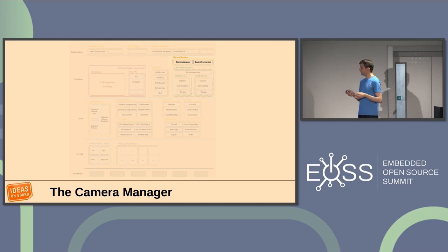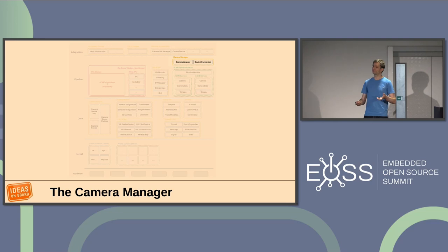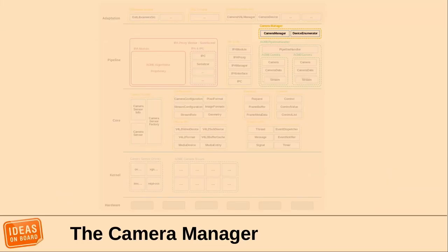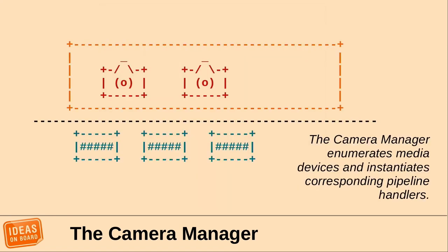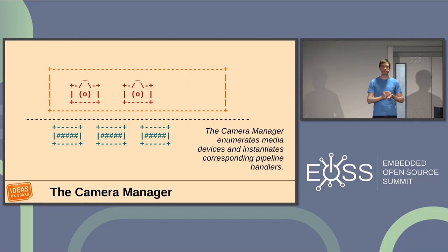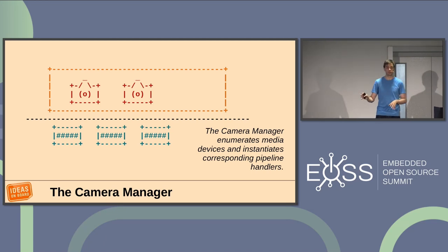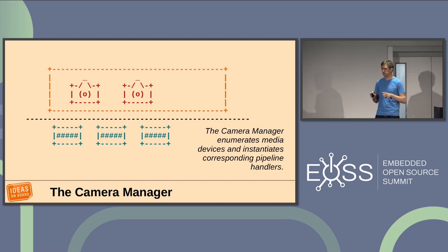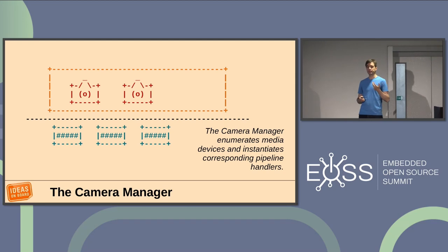The camera manager is what your applications go to: to enumerate cameras, see what's in the system, and get hold of cameras to use them. It also handles the creation of what we call pipeline handlers. The pipeline handler in libcamera is the platform-specific component that handles all the plumbing — communication with the kernel, with all the drivers. You could even have a camera pipeline that uses a GPU for processing.